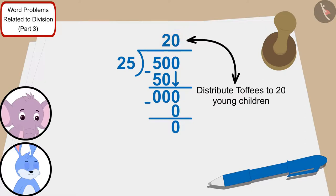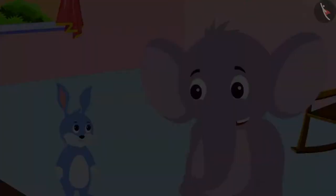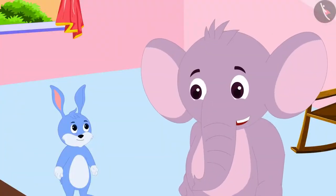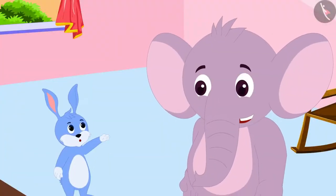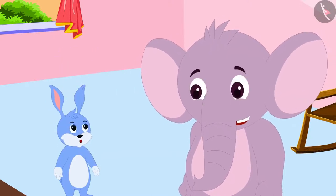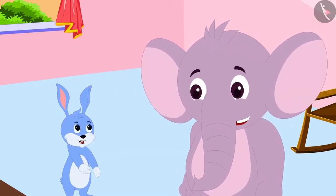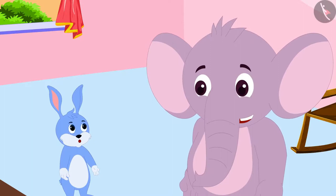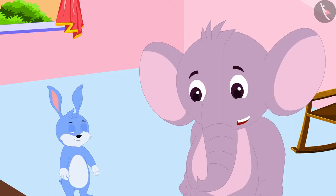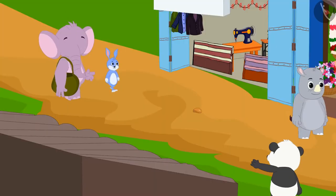Appu quickly divided 500 by 25. "Bunny, we will be able to distribute toffees to 20 young children!" Appu told Bunny. "That's absolutely correct! With this money let's buy toffees from the market and then distribute the money as well as the toffees to the villagers and children," Bunny told Appu.